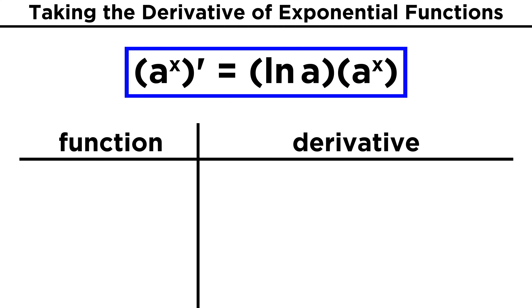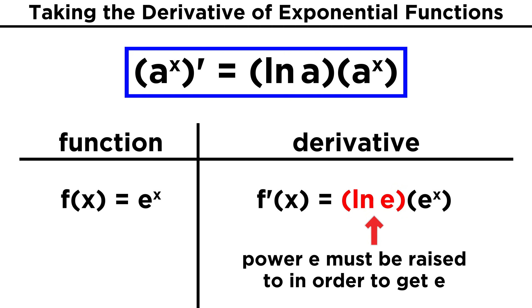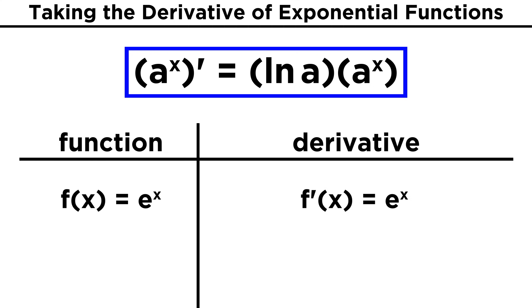Let's point out one more thing now. We mentioned that the derivative of A to the X is the natural log of A times A to the X. So what if we take the derivative of E to the X? That would give us the natural log of E times E to the X. But the natural log of E represents the power that E must be raised to in order to get E, and that power is one, so the natural log of E is equal to one, and we are left with simply E to the X.